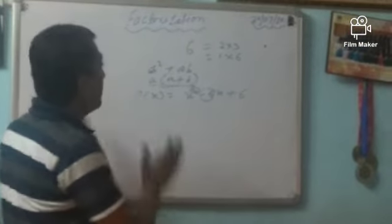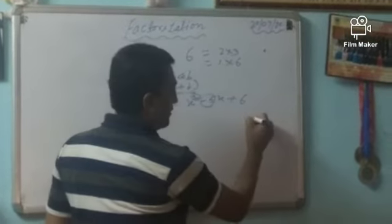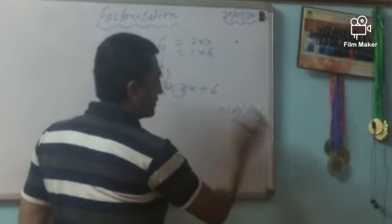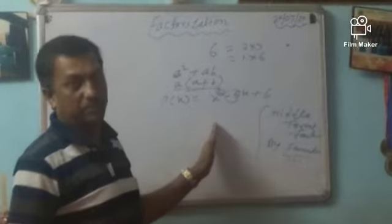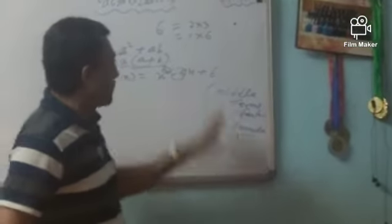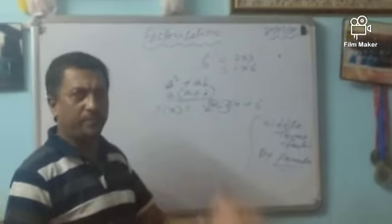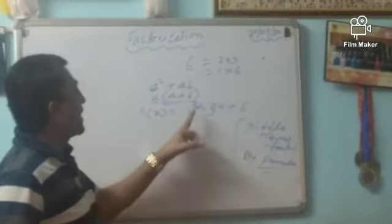Basically we do two types of factorization: one is the middle term factor method, and another is by formula. In another class we will discuss the remainder method also. Basically in class 8 standard we follow middle term factor and formula; sometimes we also apply the remainder theorem to find the factorization of a given algebraic expression or polynomial.